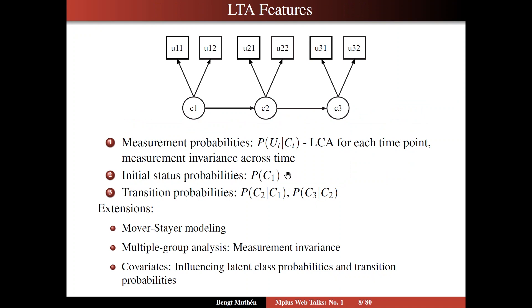So as we discussed, we talked about the measurement probabilities, that is, the relationship between C and the U's. We talked about the probability of U, given or conditional on the C variable. It is really a latent class analysis for each time point, where we typically would have measurement invariance across time. So the probabilities would be held to be equal across time, so that we are sure that we are considering the same latent variable construct.